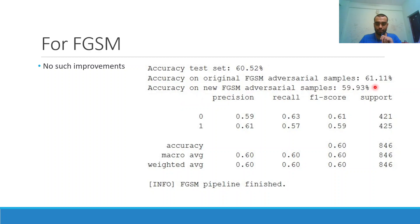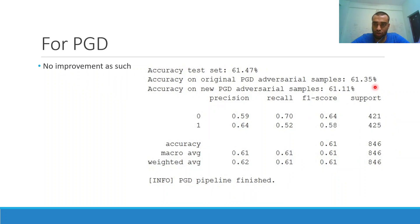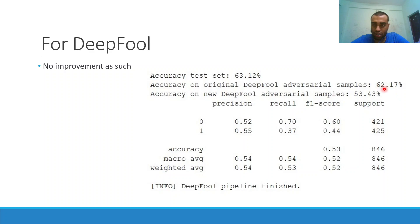For adversarial attacks on the face model: FGSM reduced accuracy to 61.11% — in the eye model it reduced to 50%, so this model seems slightly more robust. However, after adversarial training with FGSM samples, accuracy did not improve. We suspect the input conditioning and model capacity need improvement. For PGD, accuracy was again reduced to around 60%, and adversarial training brought only marginal improvement to about 61.11%. For DeepFool, results were similarly around 60%, and adversarial training had little effect. The overall suspected reason is insufficient preprocessing and the need for a larger network.